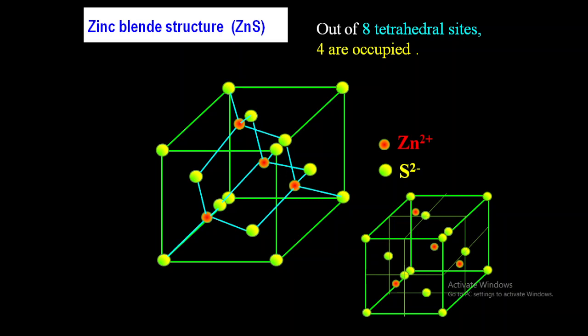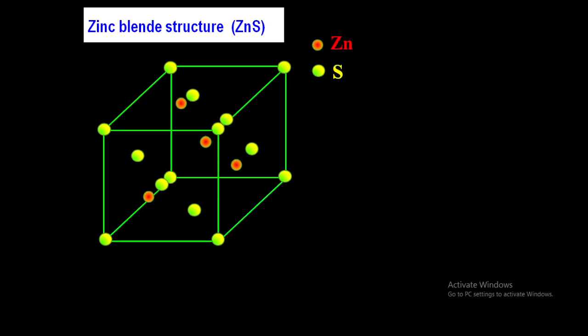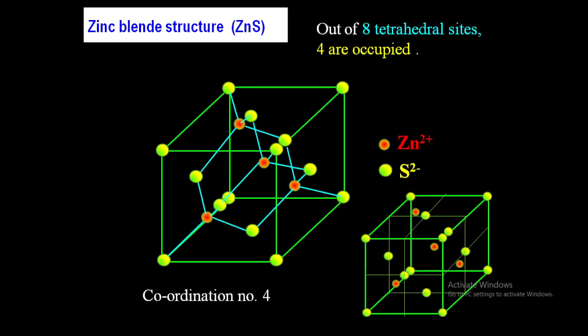So till now we have studied what is zinc blende structure and how it can be constructed. We have also seen the coordination number related to that structure — the coordination number for zinc blende structure is 4.